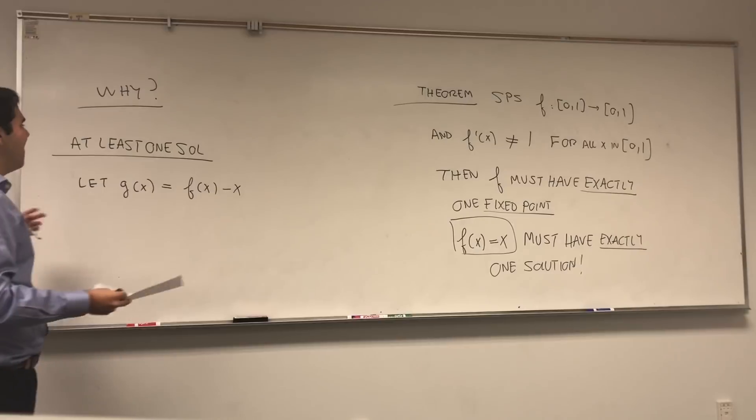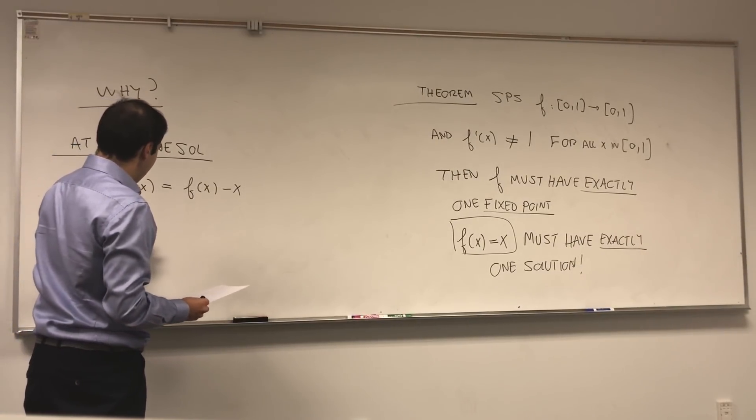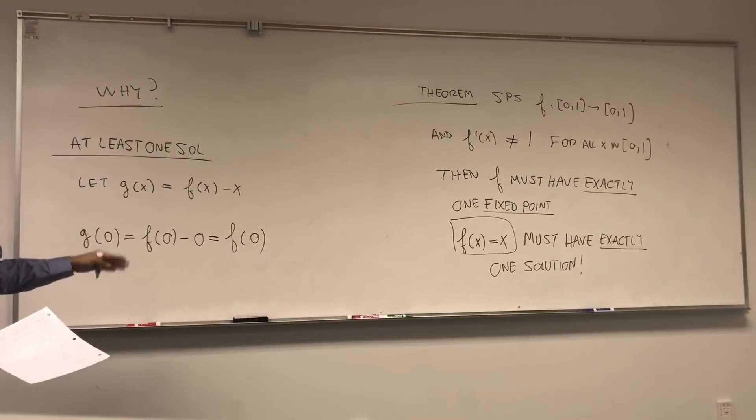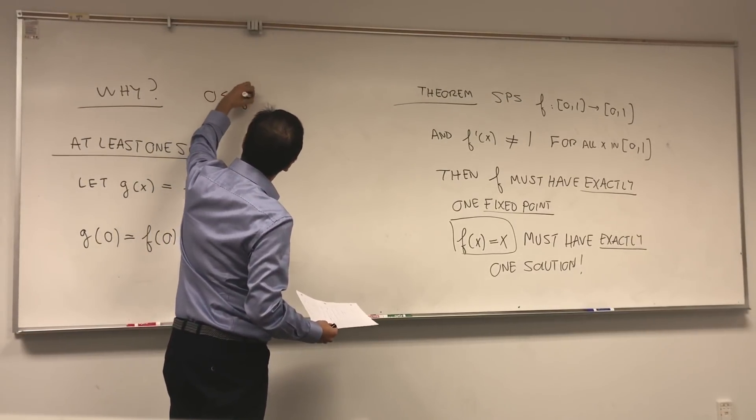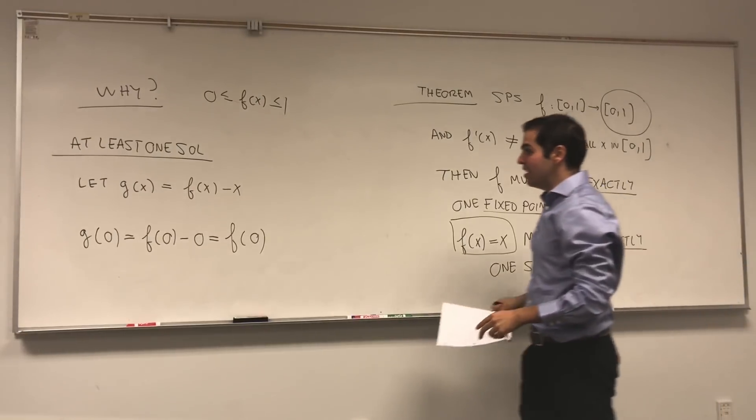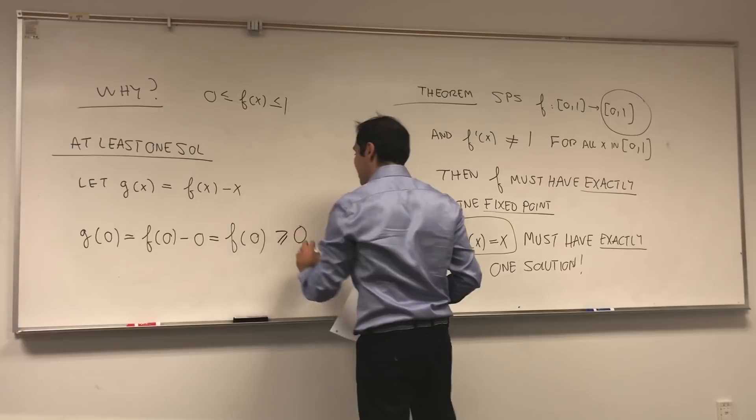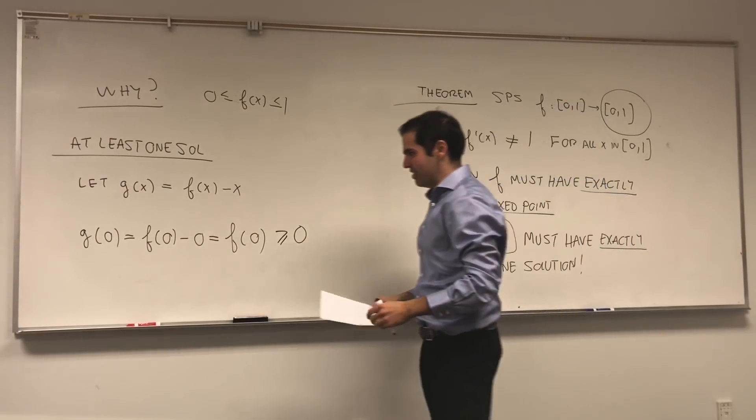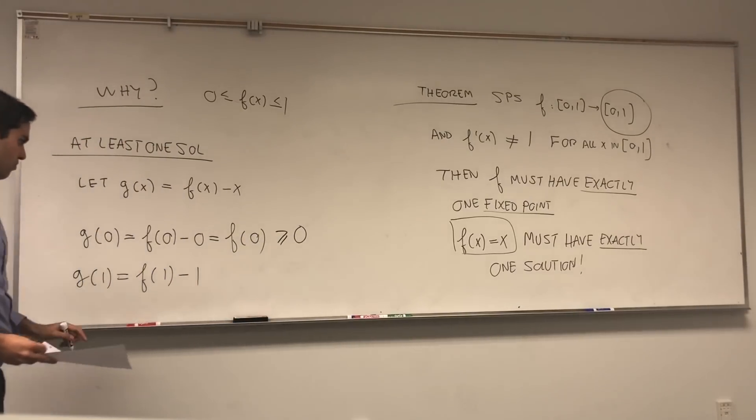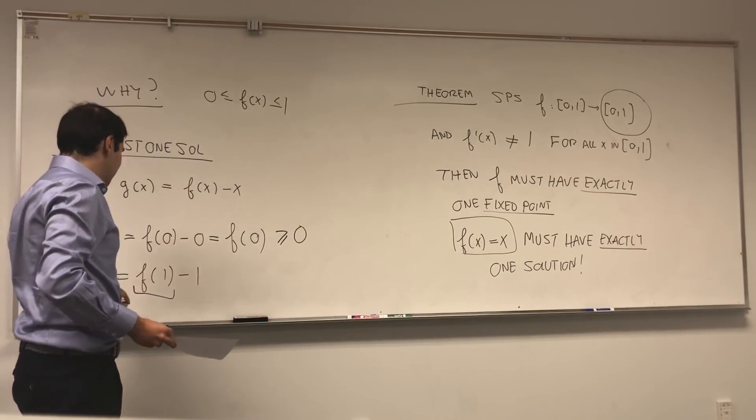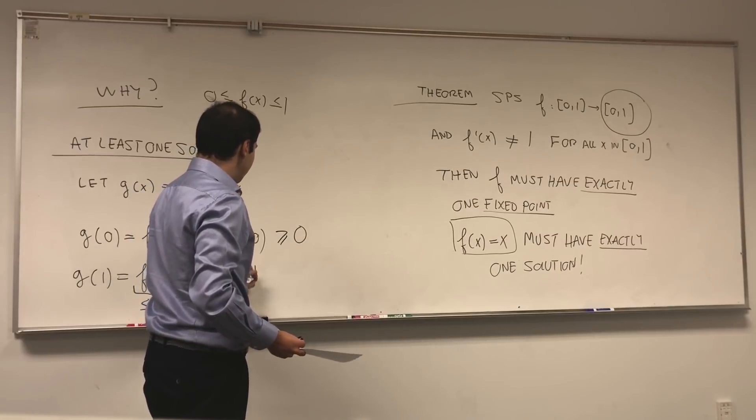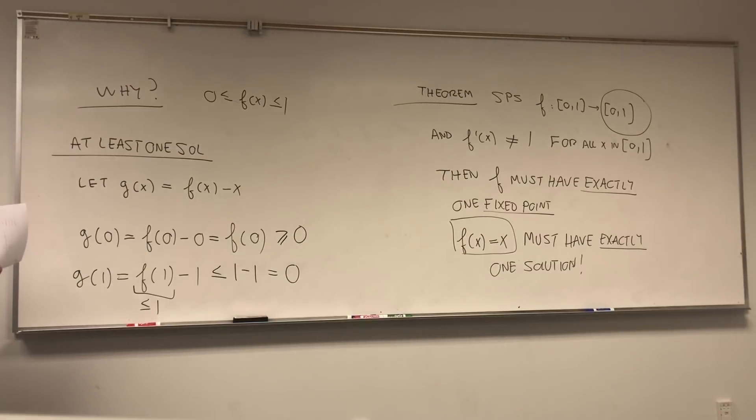And let's see what happens to g(0) and g(1). So g(0), that's f(0) minus 0, and that's f(0). But what do we know about f? f is between 0 and 1, right? So f(x) is between 0 and 1 because the codomain is the interval (0,1). So in particular, f(0) has to be greater or equal to 0 because f(x) is always greater or equal to 0. And moreover, let's see about g(1). That's f(1) minus 1. But the thing is, again, f(x) is always less than or equal to 1. So f(1) is less than or equal to 1. So this whole thing is less than or equal to 1 minus 1, which is 0.